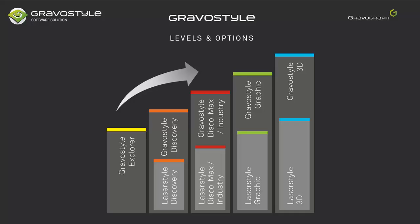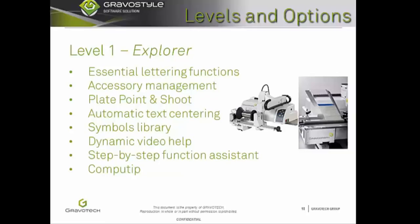Now let's discuss the key functions in the six levels of Gravastyle 8: Explorer, Discovery, Discovery Max, Industry, Graphic, and 3D. We'll give you a brief overview of these key features in each level. All functions roll over to the higher levels in Gravastyle. Let's begin with Explorer.